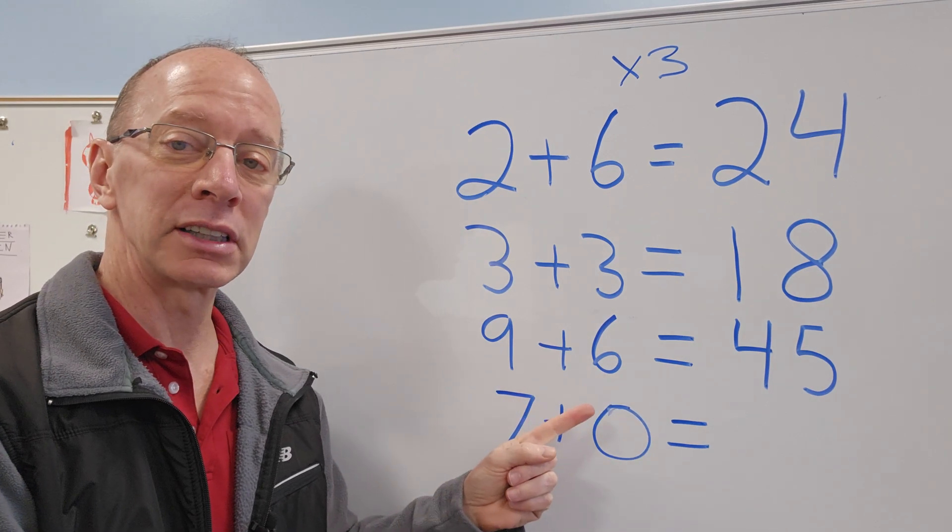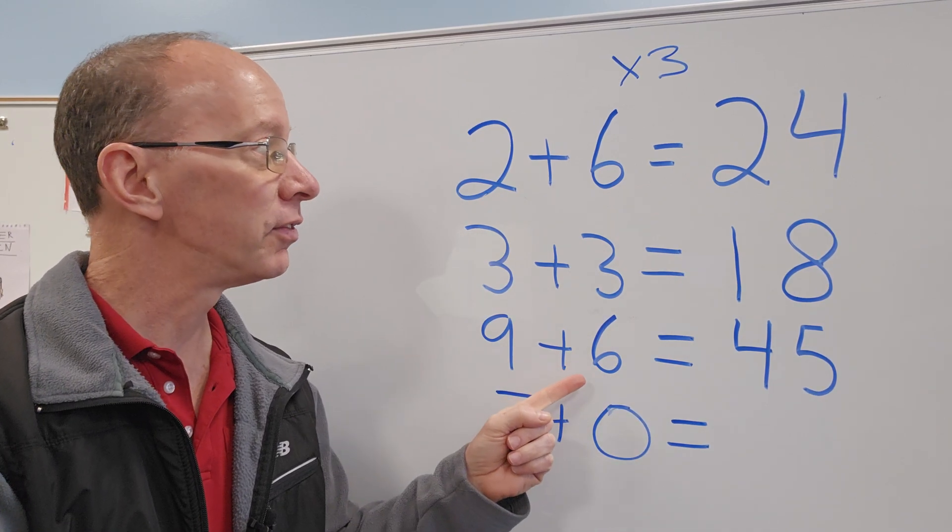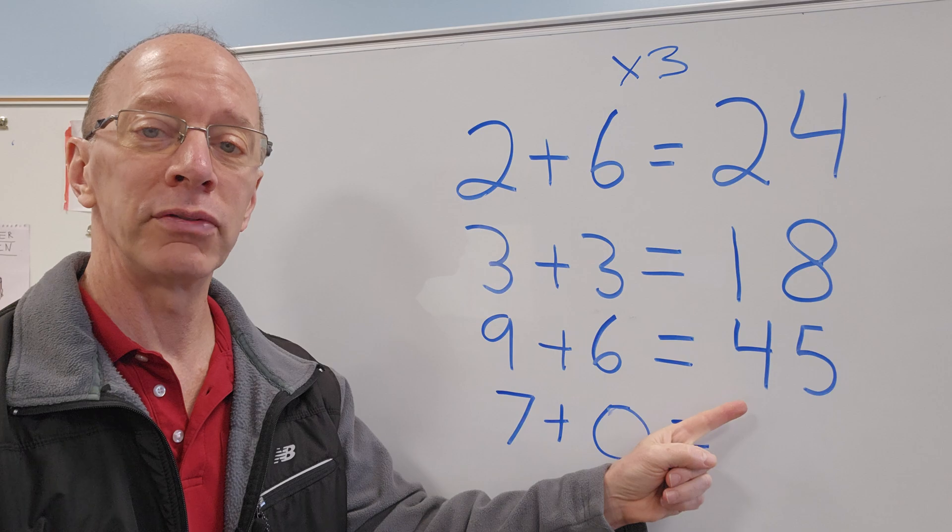Again, with 9 plus 6 equals 15, and 15 times 3 equals 45.